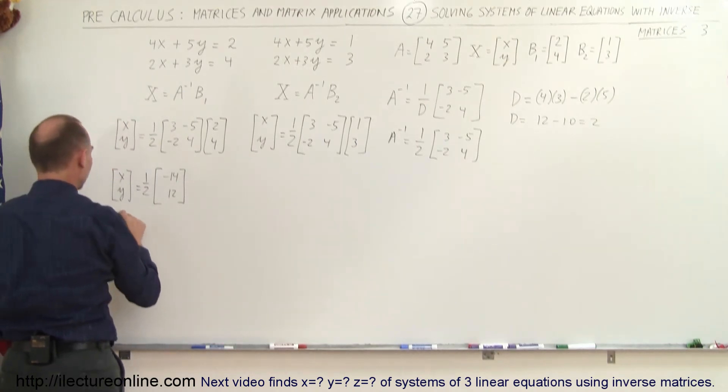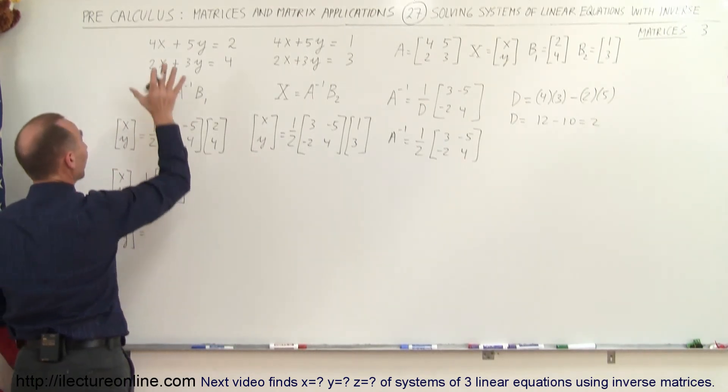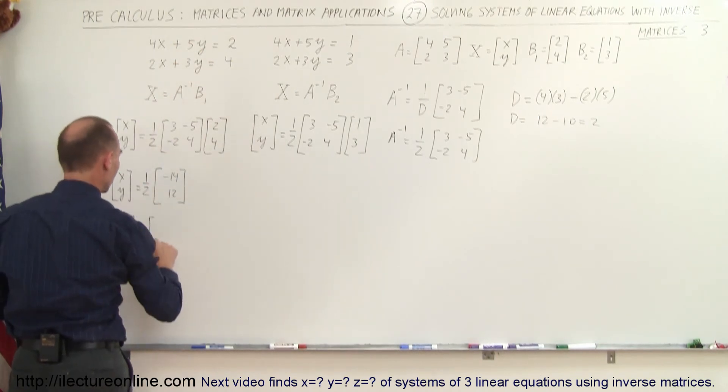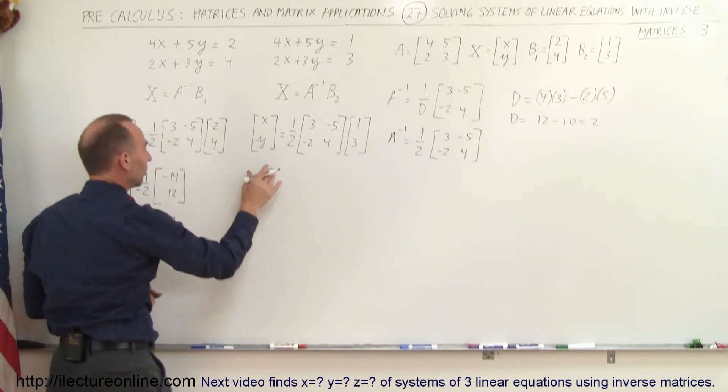So then simplifying this even further we can say that x and y, the values for x and y that satisfy this system of linear equations, is equal to minus 7 and 6.